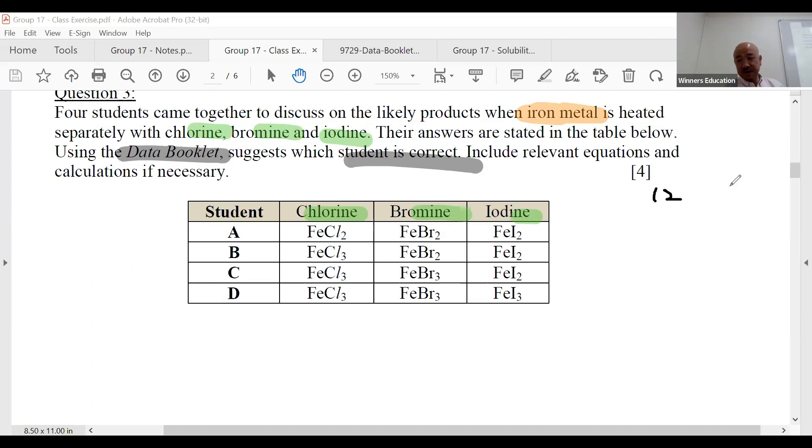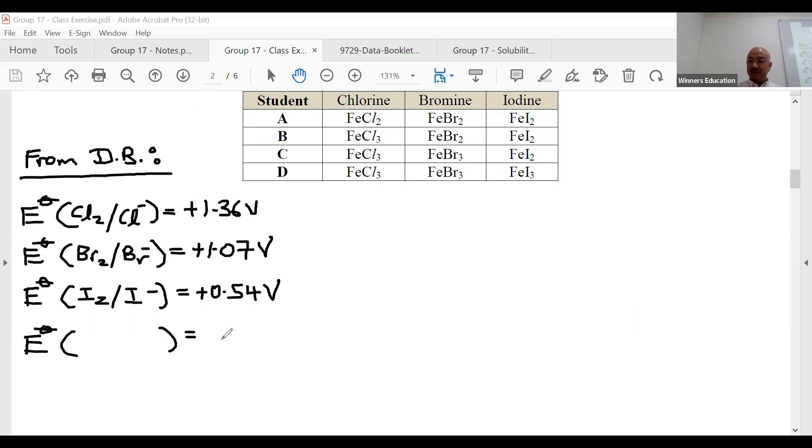If you take a look, the difference is the iron ion in the salt—does it become Fe³⁺ or Fe²⁺? Get your data booklet values out. They're all reacting with iron solid. Which E° value do you choose? That's always the first question. We did this in electrochemistry—that's why I say electrochemistry must come first.